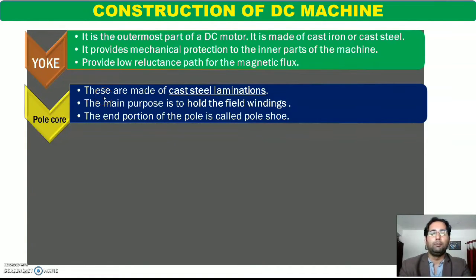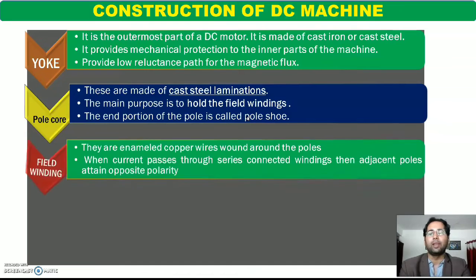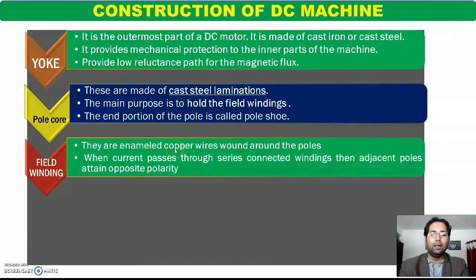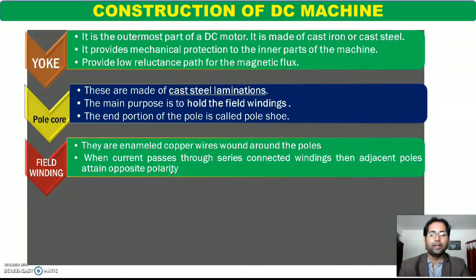दूसरा important part of stator is pole core. Pole core cast steel laminations से बने होते हैं और यह आपस में laminated होते हैं. The main purpose is to hold the field winding — इसी पर हम field winding को wound करते हैं — और यह field winding को low reluctance path, यानि magnetic flux को low reluctance path provide करते हैं. Then that portion of the pole is called pole shoe. Pole shoe का जो shape है वो especially curved क्यों होता है — इसलिए होता है ताकि uniform flux generate कर सके. Third important topic is field winding. Field winding laminated enameled copper wire का बना होता है, जो pole के चारों तरफ wound होता है. यह field winding pole to pole series में connected होती है, जिससे adjacent pole पर opposite polarity होती है — एक pole पर north होगा तो adjacent pole पर south होगा.